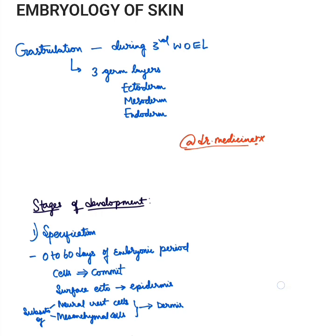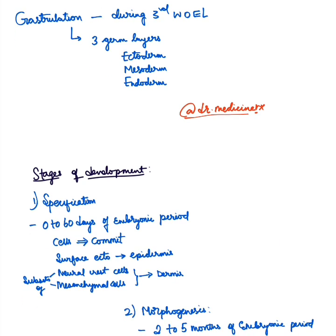Coming to the first topic — gastrulation. It is the complex process by which the three embryonic germ layers are formed: the ectoderm, the mesoderm, and the endoderm. This process begins during the third week of embryonic life.